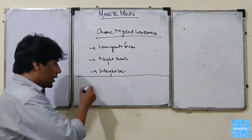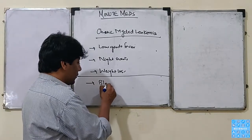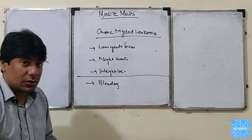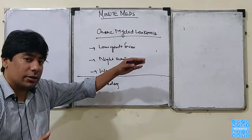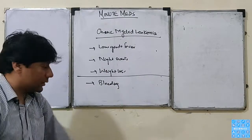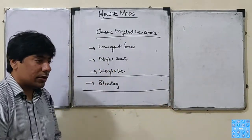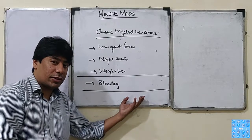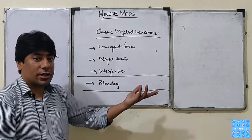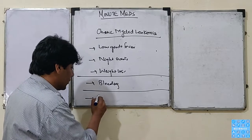Regarding platelets, they are dysfunctional, so the patient can get bleeding. The platelets are on the higher side but non-functional. The lymphocytes that fight infections are also on the higher side but non-functional, so the patient can present with repeated infections.